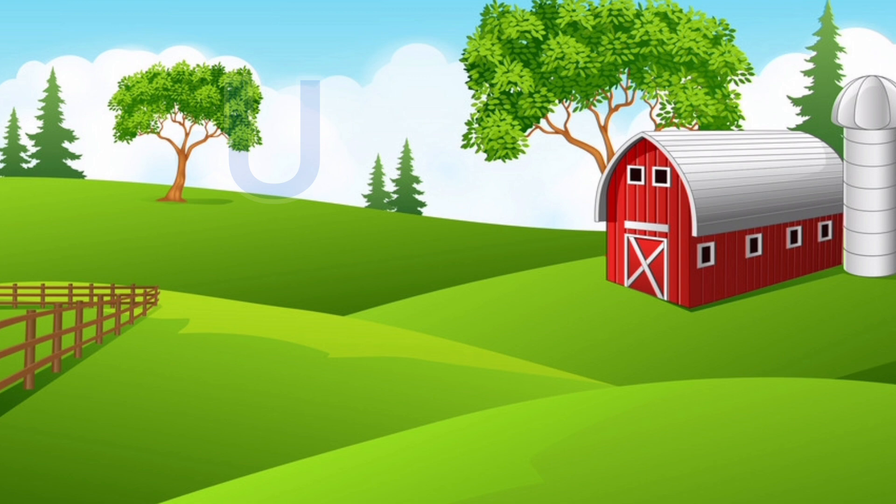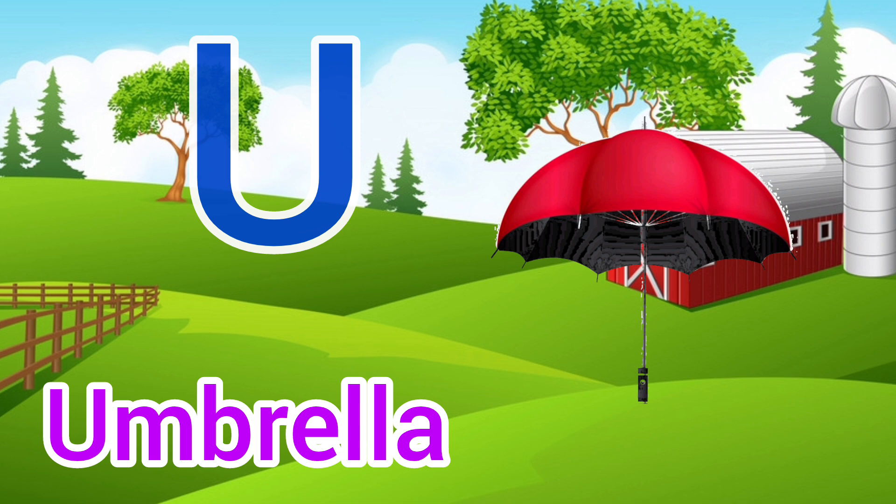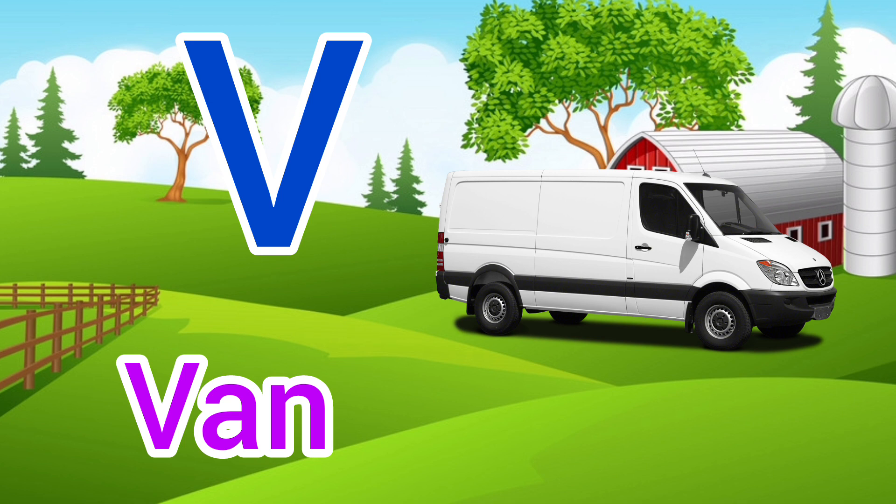U. U for Umbrella, Umbrella means Chata. V. V for Van, Van means Gaadi.